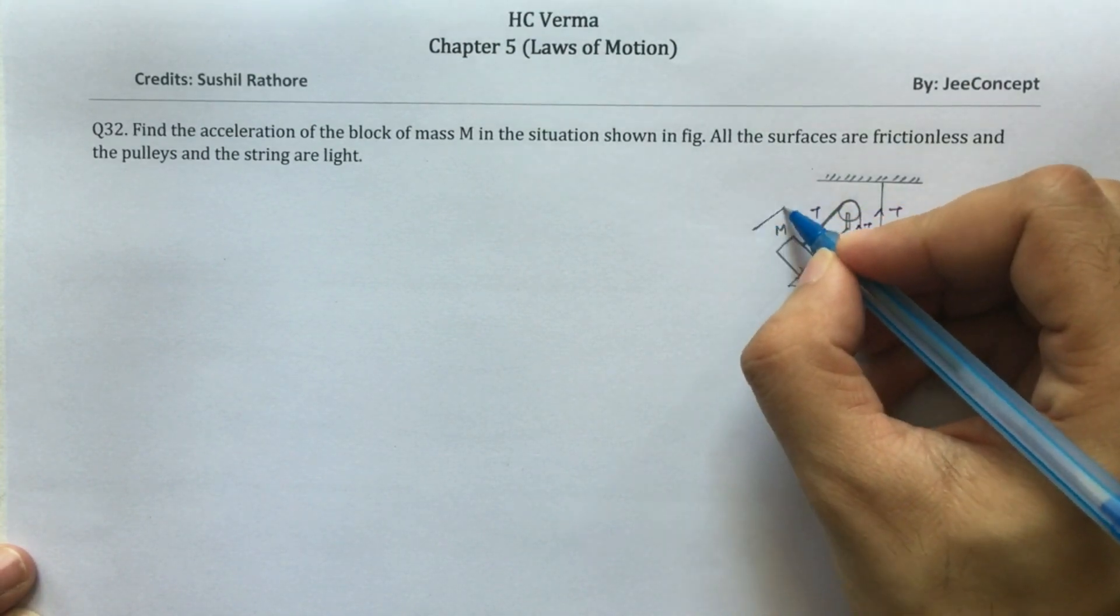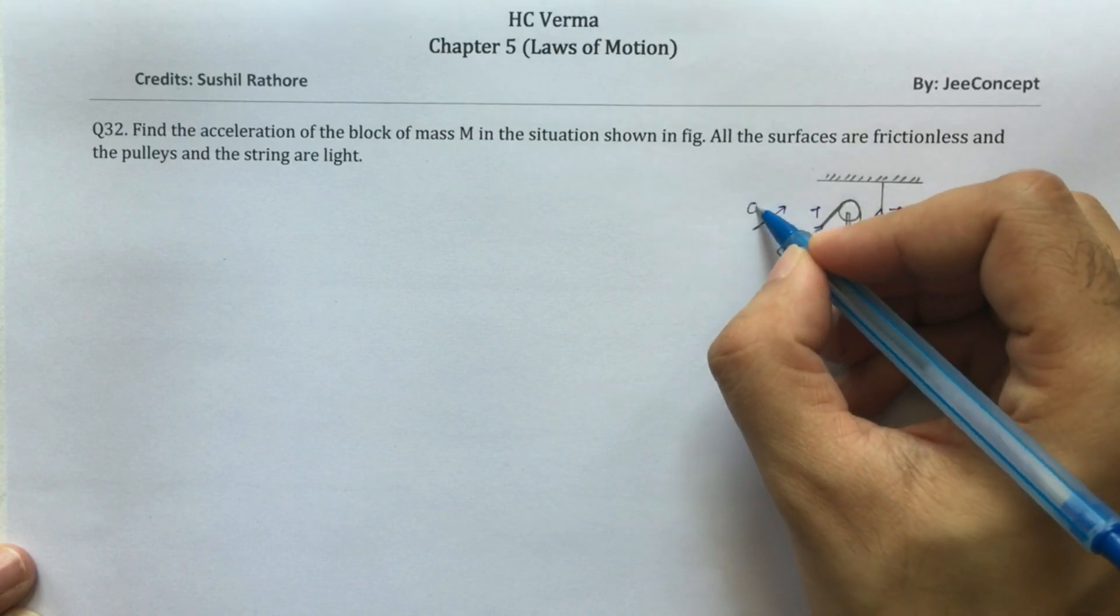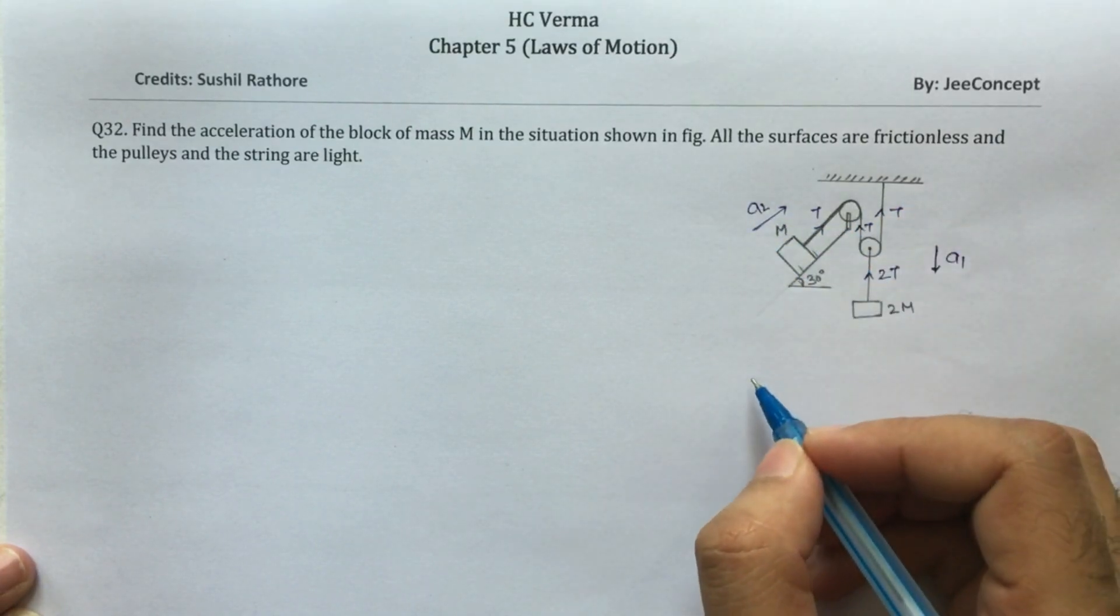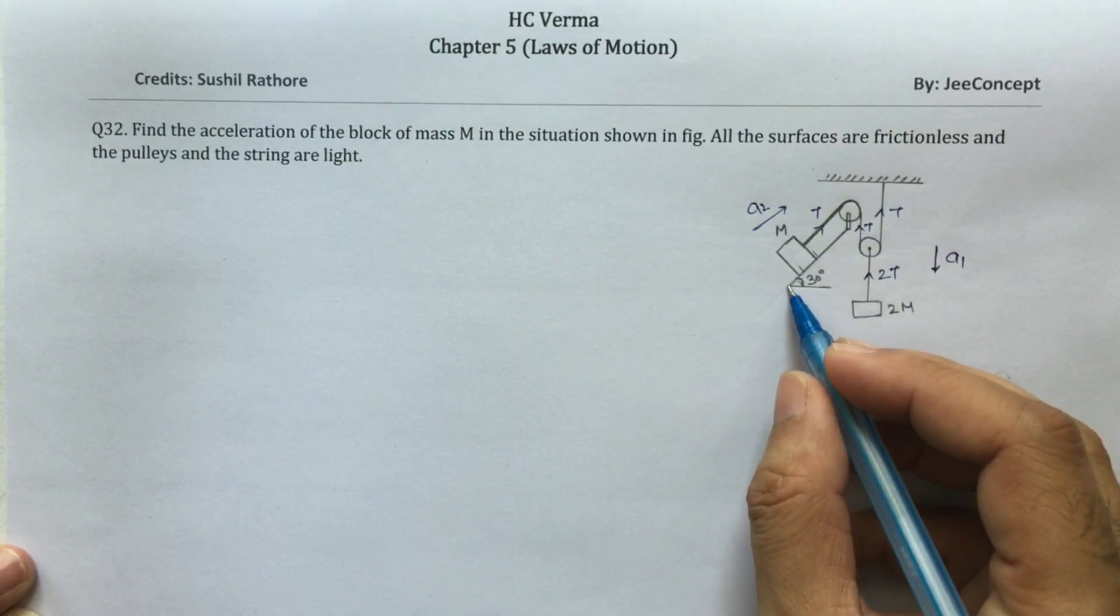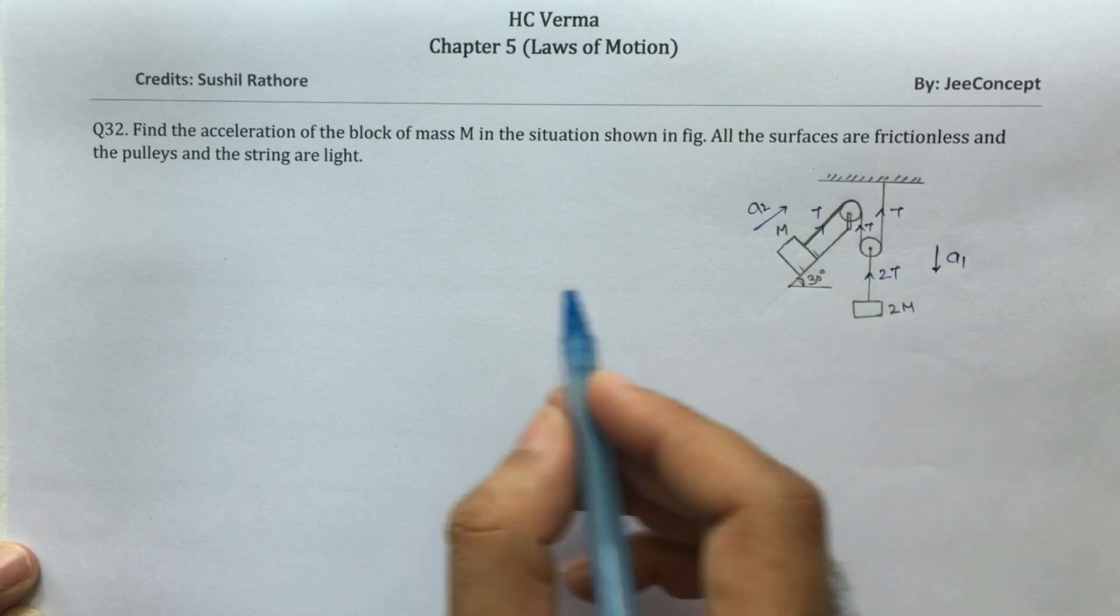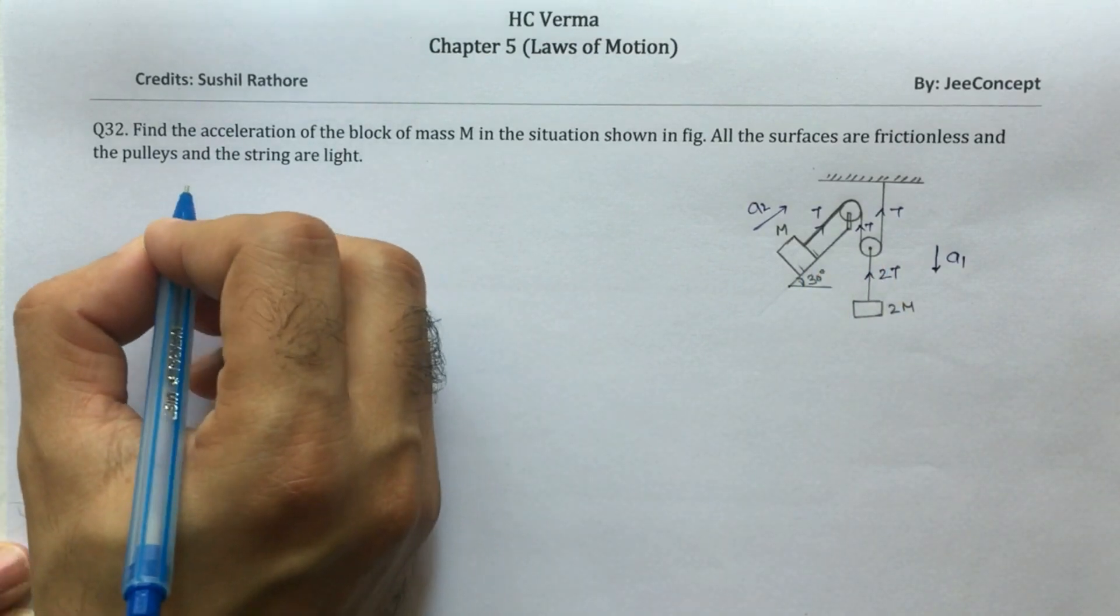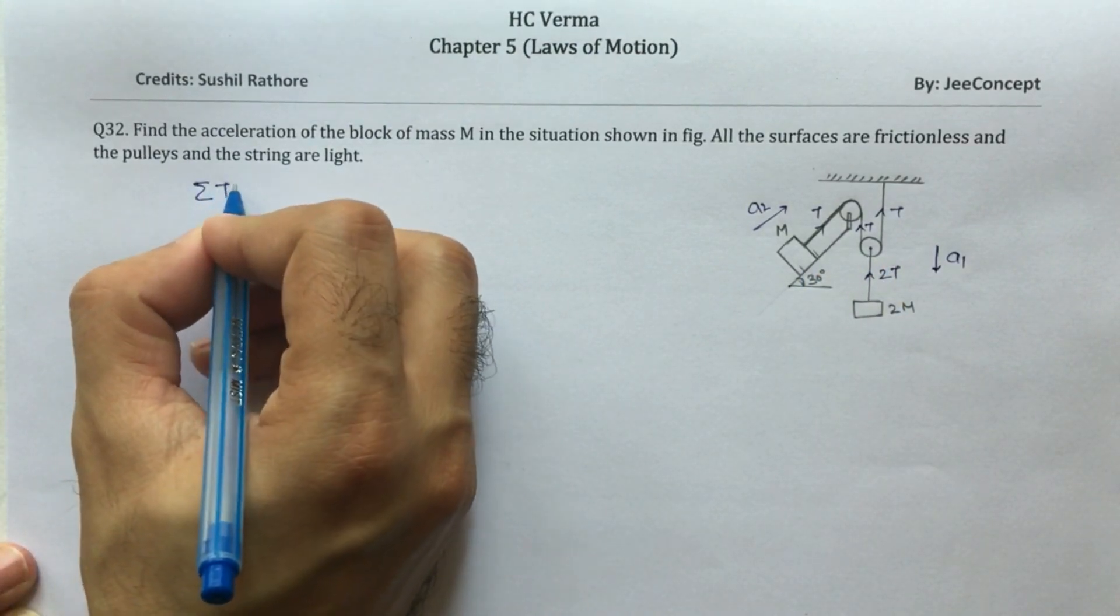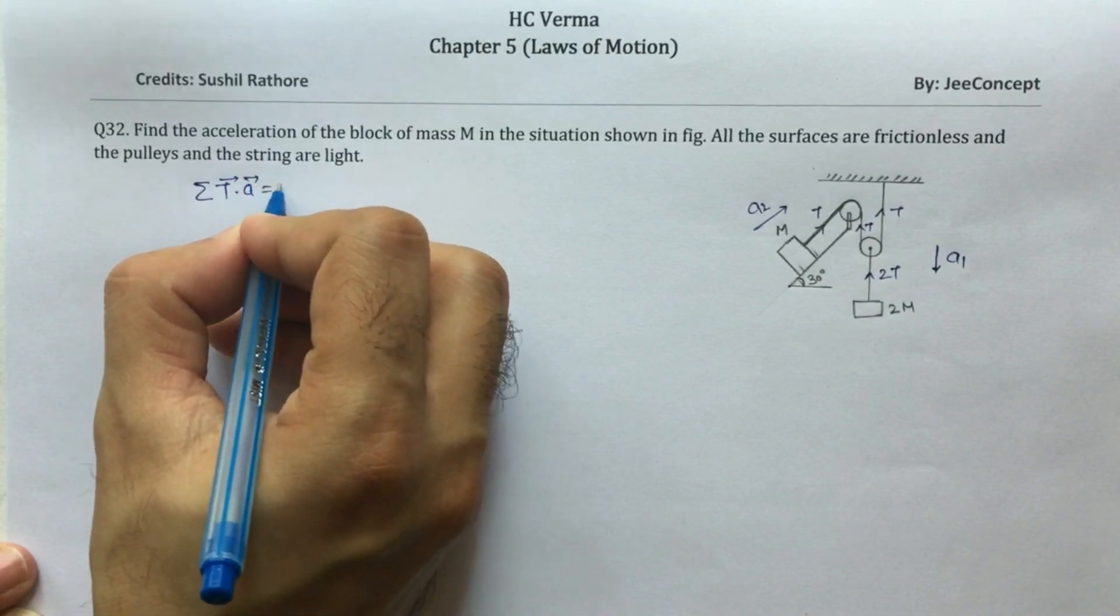Let's say this has an acceleration a1, and the acceleration of this M block is a2 in upward direction along the slant. Clearly this is the situation of the constrained motion.